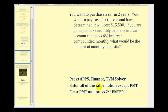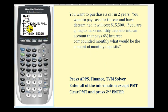We'll go back to the calculator, and using this feature we only have to change one thing. N is now only going to be a total of twenty-four payments, or twelve months times two years. Press Enter, then go back down to PMT for payment, clear the old amount, and then press Alpha Enter again.